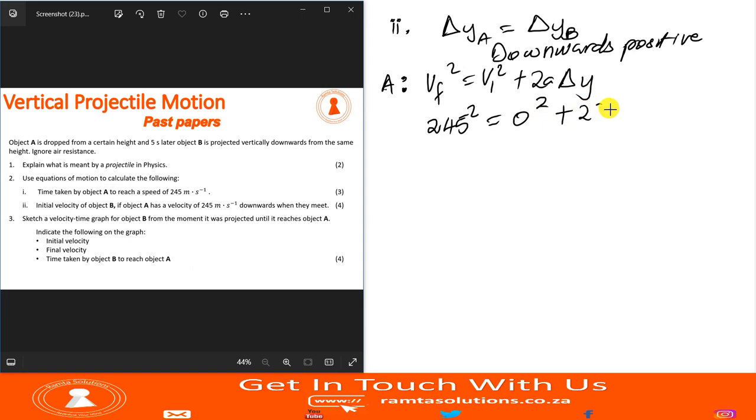So this is 245 squared equals zero squared plus two times 9.8 delta Y. So what is 245 squared? 245 squared is 6025 equals 19.6 delta Y.